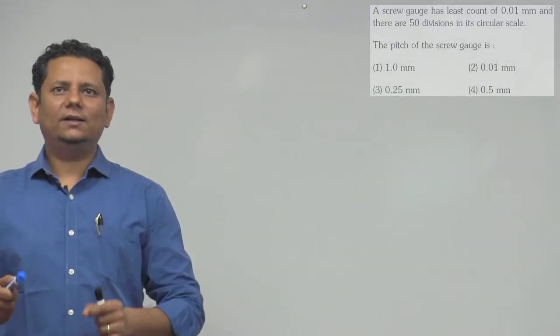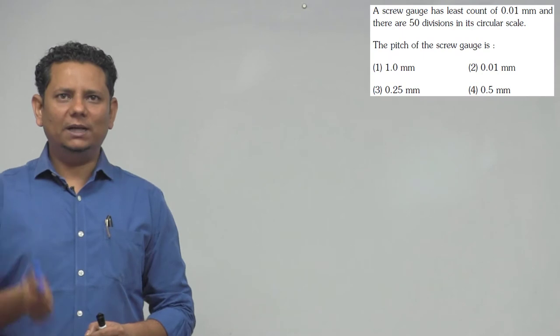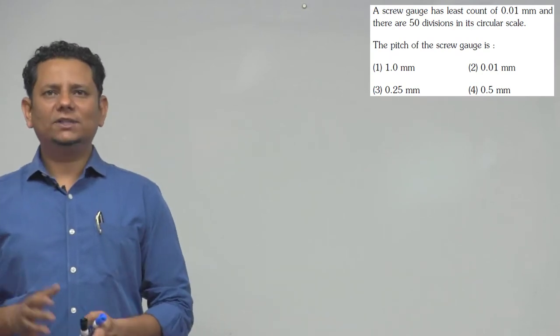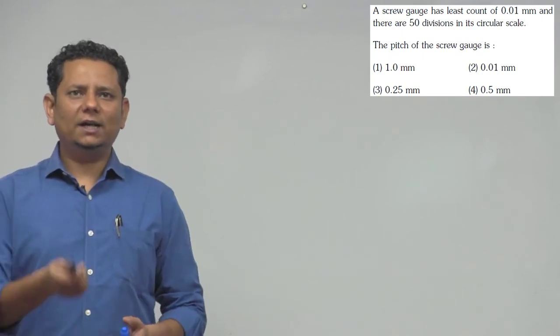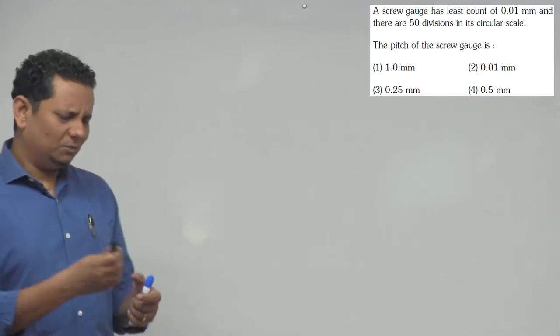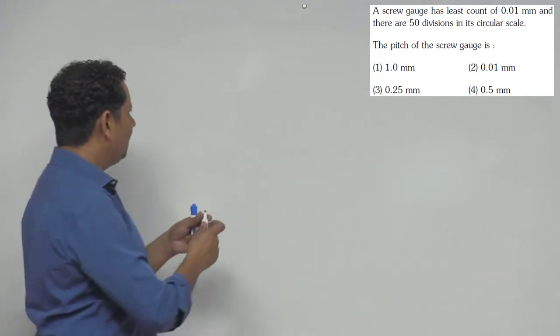Our next question: the screw gauge has a least count of 0.01 mm and there are 50 divisions in the circular scale. Now, it's a simple question.